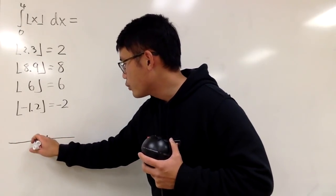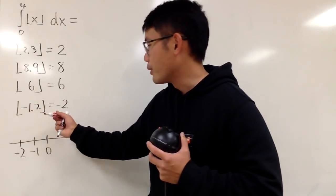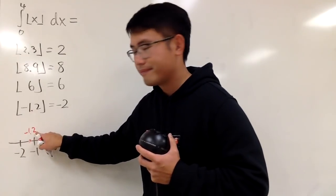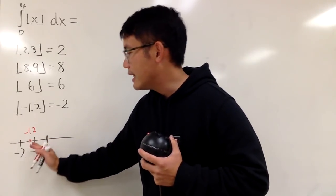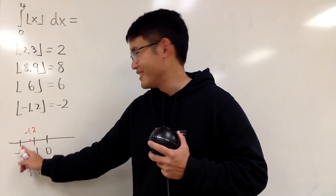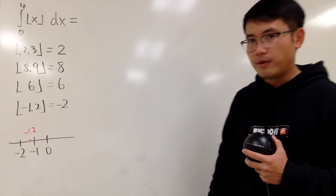Well, let's look at the number line real quick. Here is 0. Here is negative 1. Here is negative 2. You are talking about negative 1.2, which is right here. The biggest integer that's less than negative 1.2, you pretty much just look to your left, which is negative 2, just like that. So that's pretty much it for the floor function.